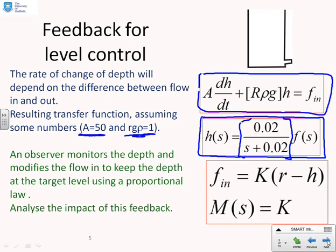Now we're going to complicate this by adding some feedback. We're going to assume that the input flow f_in is some constant times the error between the target r and the depth h. This is called a proportional feedback law because the flow is proportional to the error in the depth between the target and the actual depth, and we're going to analyze the impact of this feedback. In terms of our block diagrams this is the same as saying M(s) equals capital K.